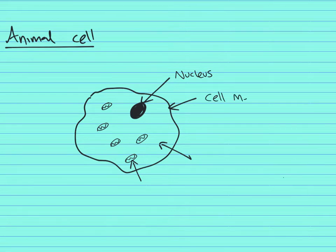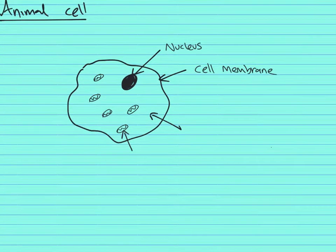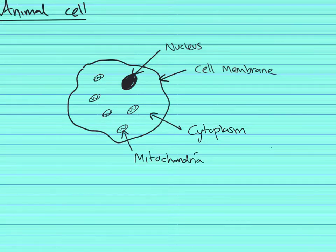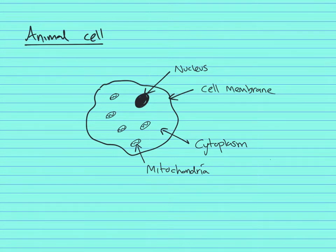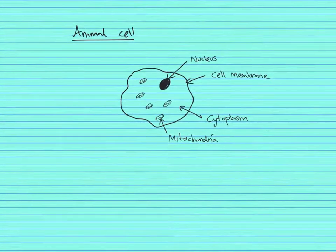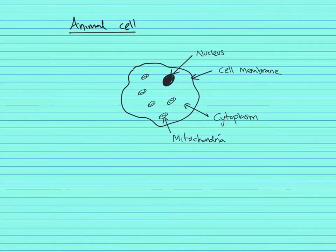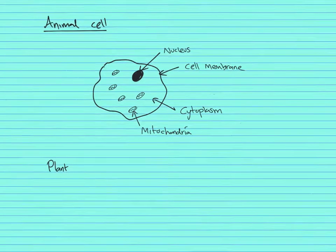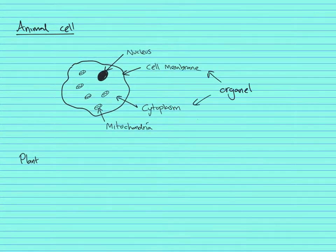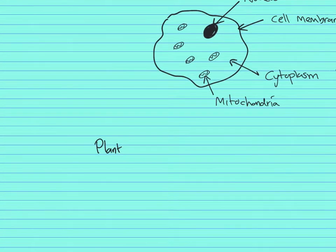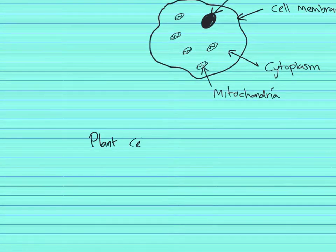Then we have the cell membrane — not a cell wall. Plants have cell walls; animals do not. The stuff in the middle is called the cytoplasm. The little things with zigzags are called mitochondria. So there are four things in an animal cell. Each of these things is called an organelle, so if you get a question like 'name the organelle found in such and such,' you'll know what to say.